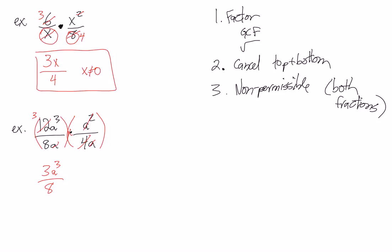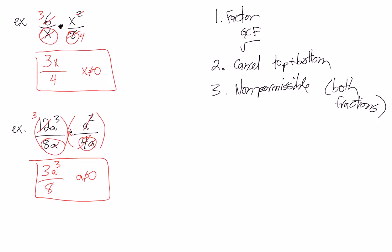Our non-permissible: we have 0 for the first one since 8 times 0 would be 0, and 0 for the second one as well because it's 4A. So in both cases A can't be 0. So 3A cubed over 8, and A can't equal 0.